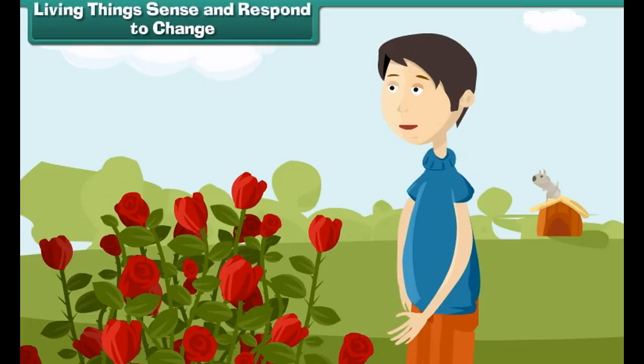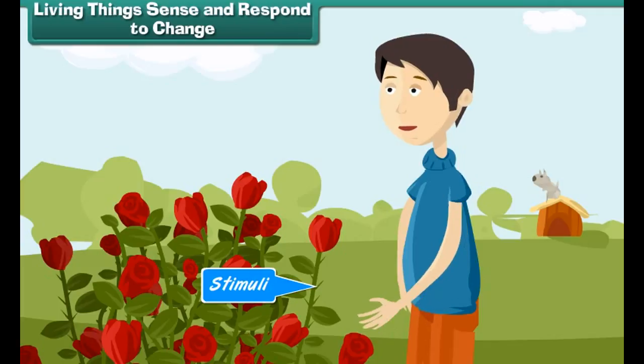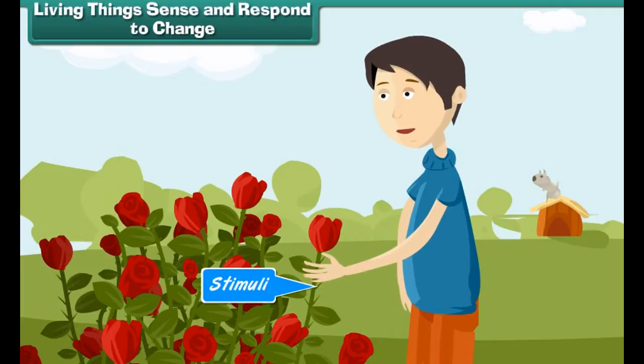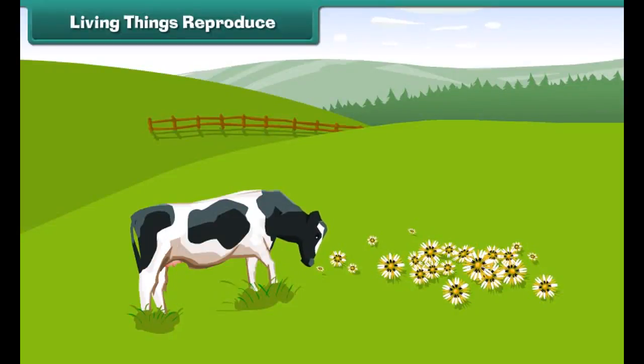Living things reproduce. Young ones grow and become mature, and develop the faculty to produce young ones of their own type. Life comes from pre-existing life.